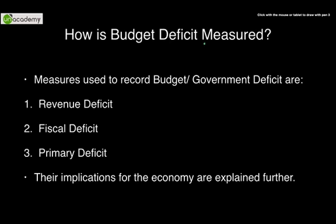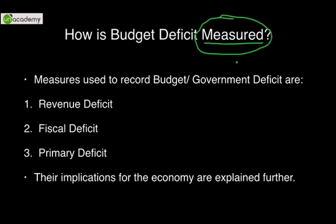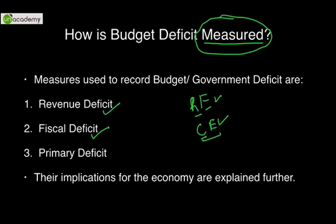Now if we have to measure the budget deficit, what are the separate ways of measuring it? We know that there is deficit, but how do we measure it? We measure it on the basis of the kind of expenditures. As discussed in the first part of fiscal policy, there are revenue expenditures and capital expenditures. On the basis of type of expenditure, we decide whether it is a revenue deficit, a fiscal deficit, or a primary deficit. Primary deficit is only an extension to these two deficits.